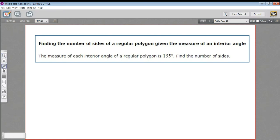In this problem, we are given one angle of a regular polygon. So it's a regular polygon, that means all the angles are 135. And we're being asked to find the number of sides of this polygon, so this is an interior angle. So how are we going to do that?